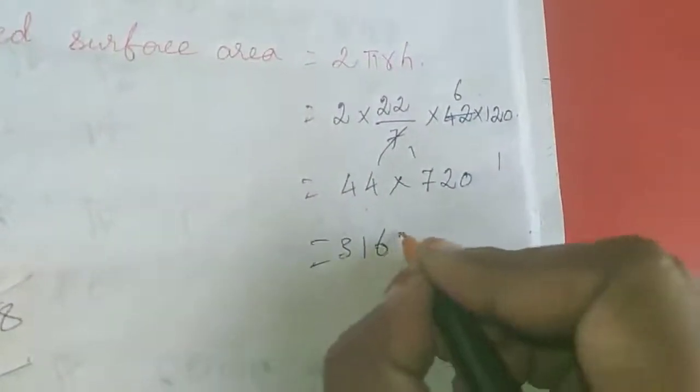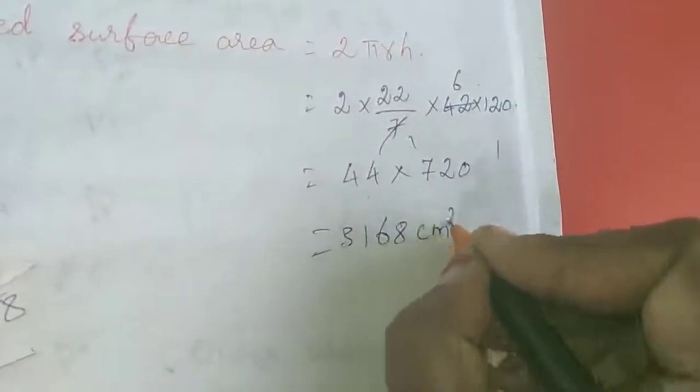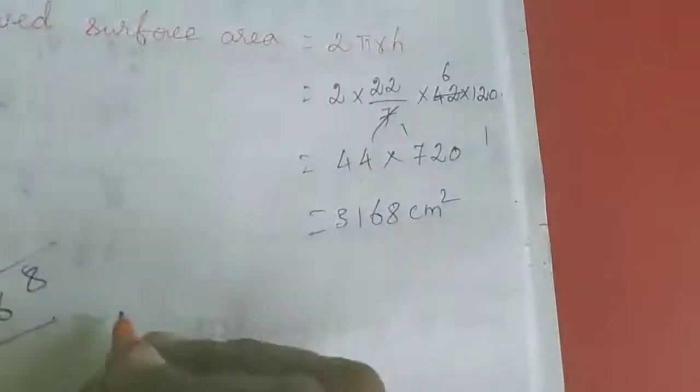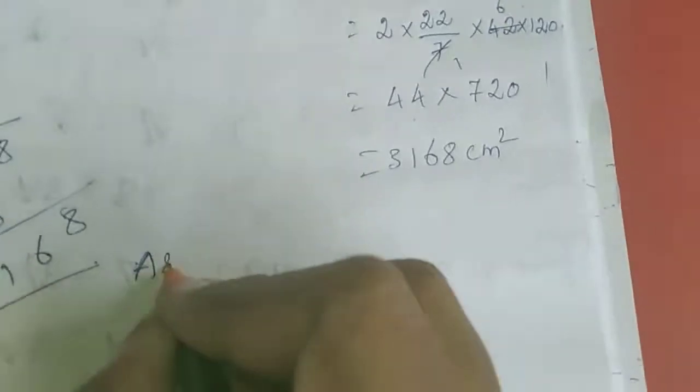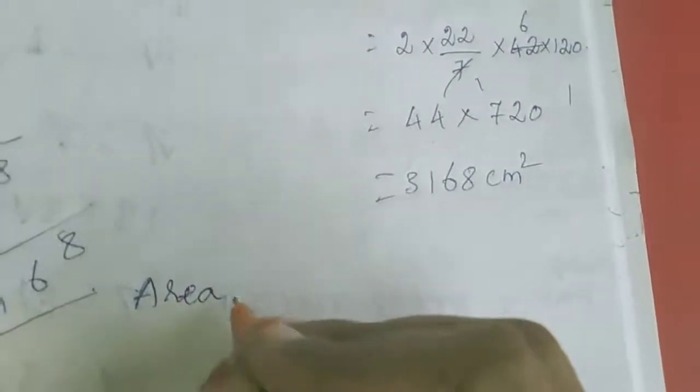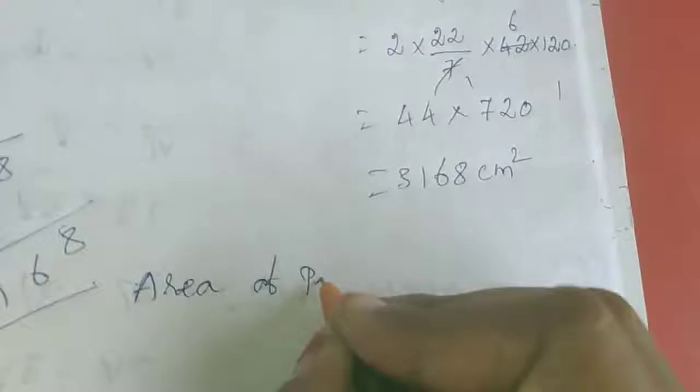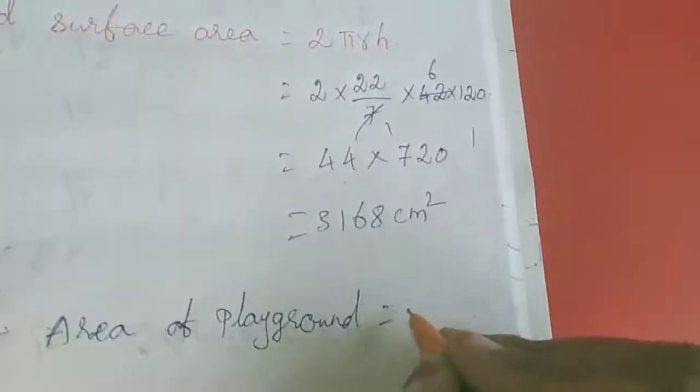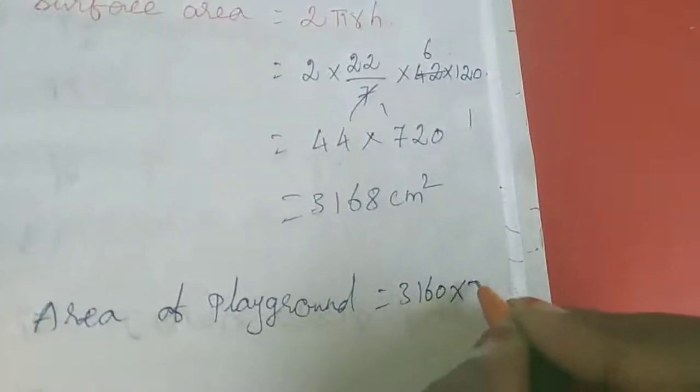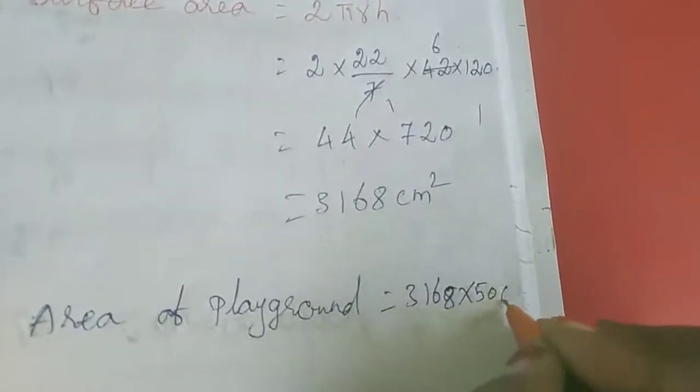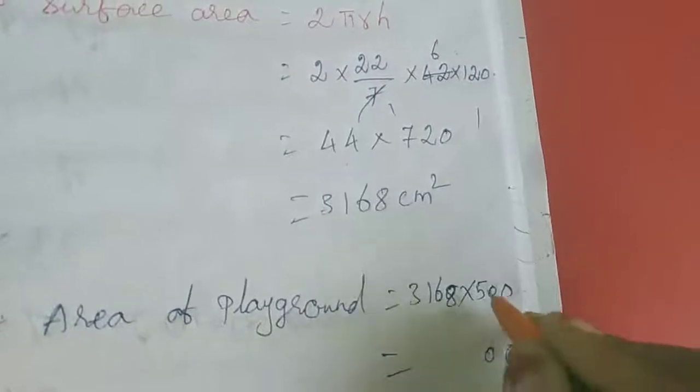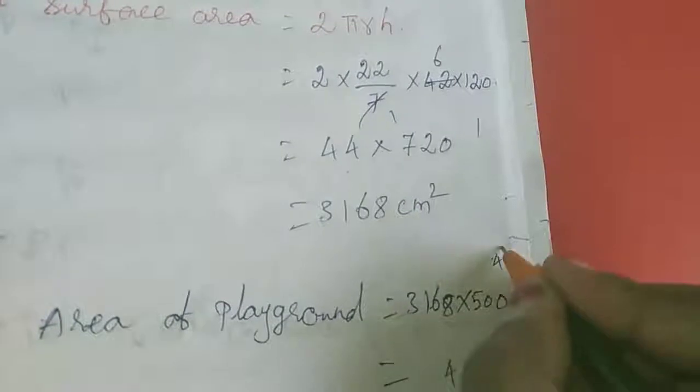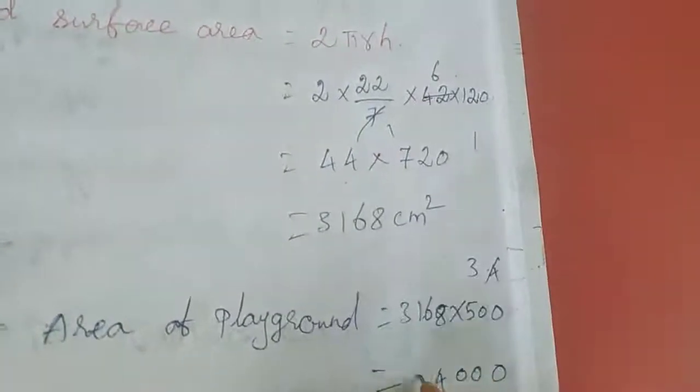So 8, 28, 8, 16, carry 1, carry 3... 3168 cm square. This is the area for 1 roll but we need for 500 complete revolutions. So area of playground equals this value into 500. Last digit is 0, next is 0, carrying 4, 30, 34, 4, carrying 3, 5, 8.